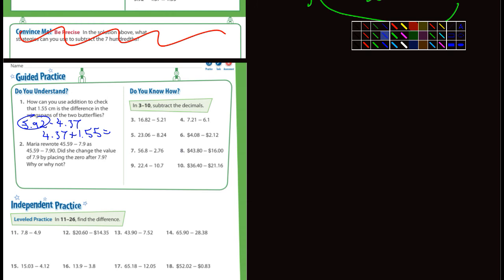Look at number two. Maria wrote that 45.59 minus 7.9 as 45.59 minus 7.90. Did you change the value of 7.9 by placing a zero after the nine?